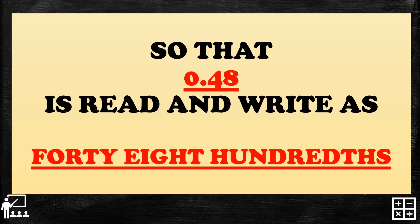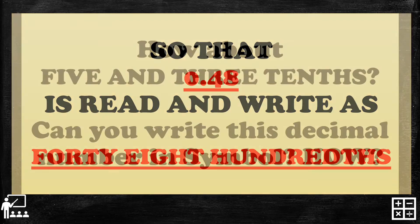So zero point forty-eight is read and written as 'forty-eight hundredths.' We don't use the word 'and' because we don't have a whole number part — we just have a fractional part, which is 48. We go directly to step three, which is the place value name of the last digit, hundredths.